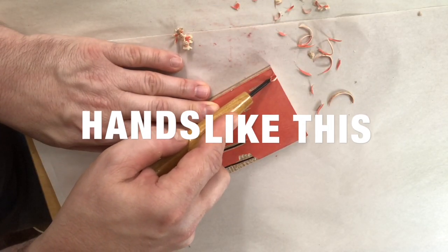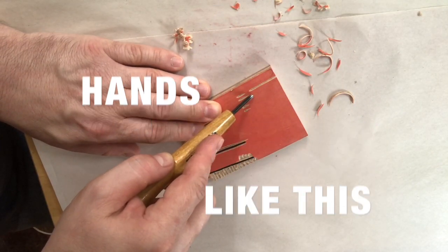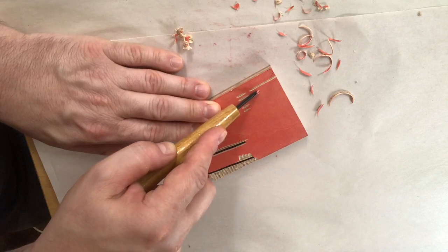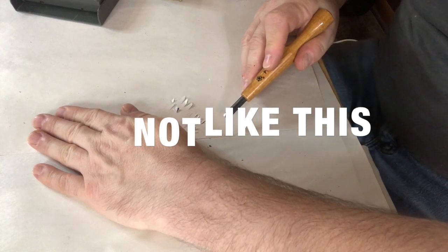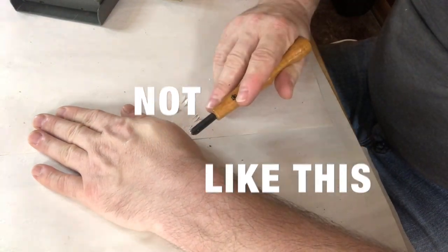When you're cutting, be aware of where your hand that's not holding the tool is. It should be supporting the block and helping guide your hand. It should not be in front of your cutting motion.